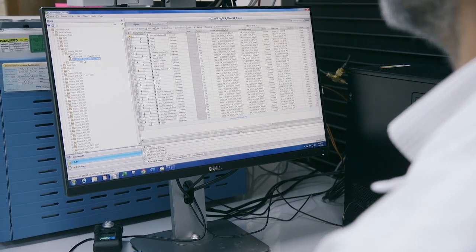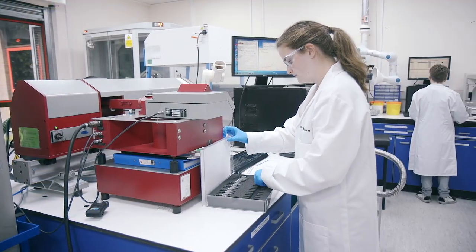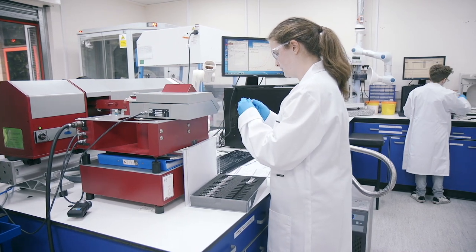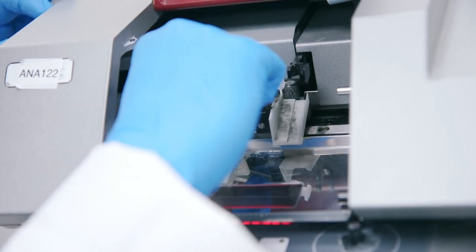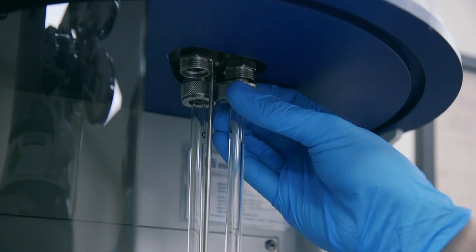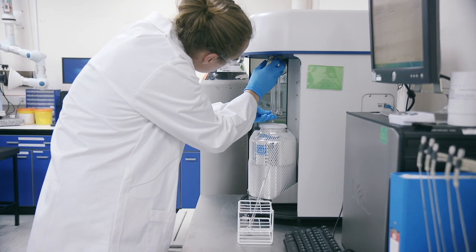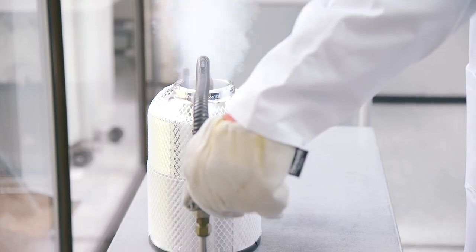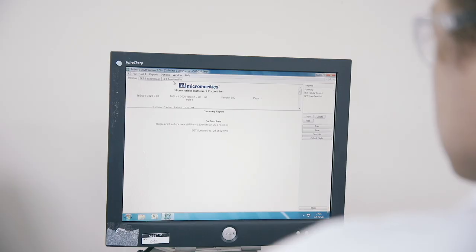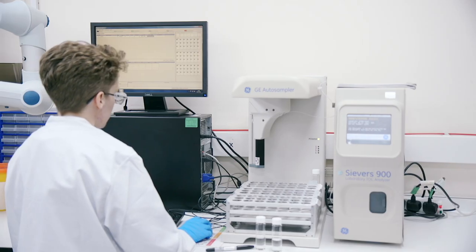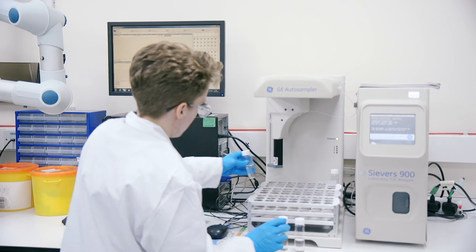The instruments here in our solid-state lab measure a range of physical parameters and powder properties. For example, we measure particle size using the Sympatec HELOS-RODOS Vario, specific surface area using our two Micromeritics TriStar instruments, thermal analysis using DSC and TGA for melting point, glass transition, degradation temperatures and volatiles content, and carbon content using our TOC analyzer, the Sievers 900.